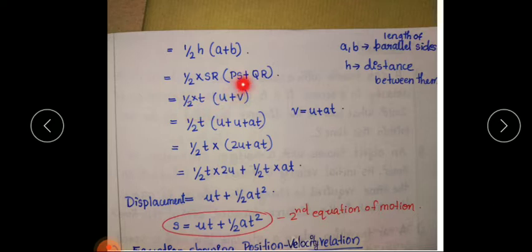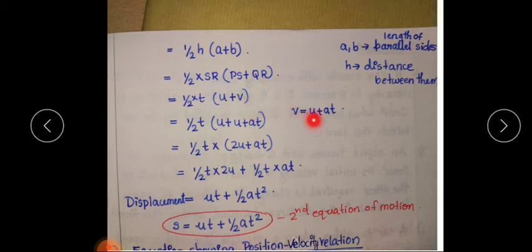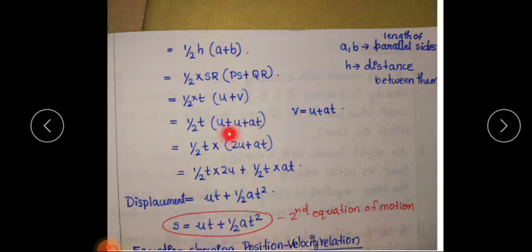We can write PS as U and QR as V. That gives us ½ × T × (U + V). From the first equation of motion, we have V = U + AT. So instead of writing V, we can write U + AT. So we get ½ × T × (U + U + AT), which is ½ × T × (2U + AT).